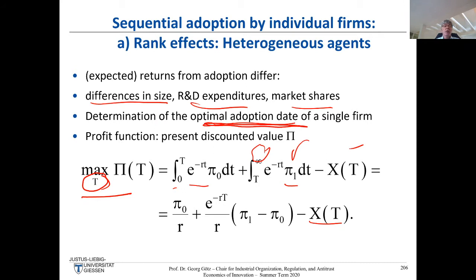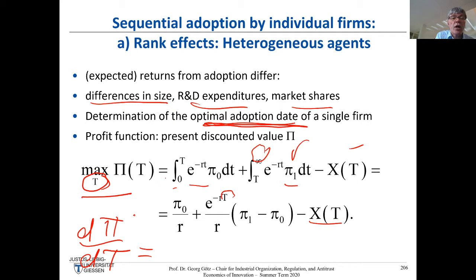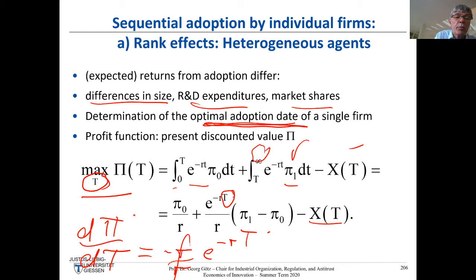We take the derivative with respect to the adoption date T. Since T appears in the exponential, we get a factor that cancels, leaving us with the term e^{-rT} times (π₁ - π₀ - x'(T)) set equal to zero, where x'(T) = dx/dT is the derivative of adoption costs with respect to T.